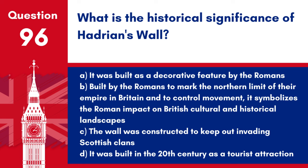Question 96: What is the historical significance of Hadrian's Wall? Built by the Romans to mark the northern limit of their empire in Britain and to control movement, it symbolises the Roman impact on British cultural and historical landscapes. Hadrian's Wall is an iconic monument of Roman Britain and a UNESCO World Heritage Site.